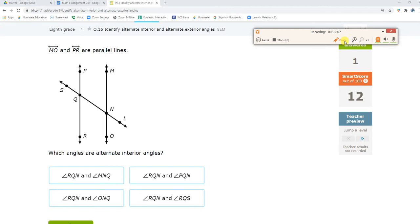Okay, so notice angle RQN. There we go. And alternate interior is this one over here, so it's angle MNQ. It's this guy.